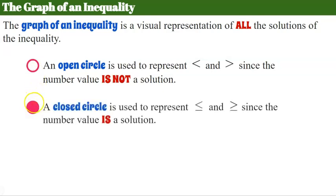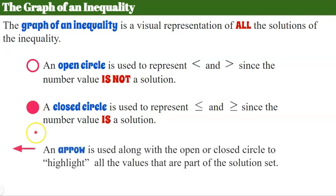We could also have a closed circle, where you can see it's all shaded in — it's filled in. That is used to represent less than or equal to and greater than or equal to, since that number value is part of the solution set. It's closed in because it can be equal to. Then we have an arrow, used with the open or closed circle. The arrow can point to the left or towards the right, and we use it to highlight all the values that are part of the solution set.